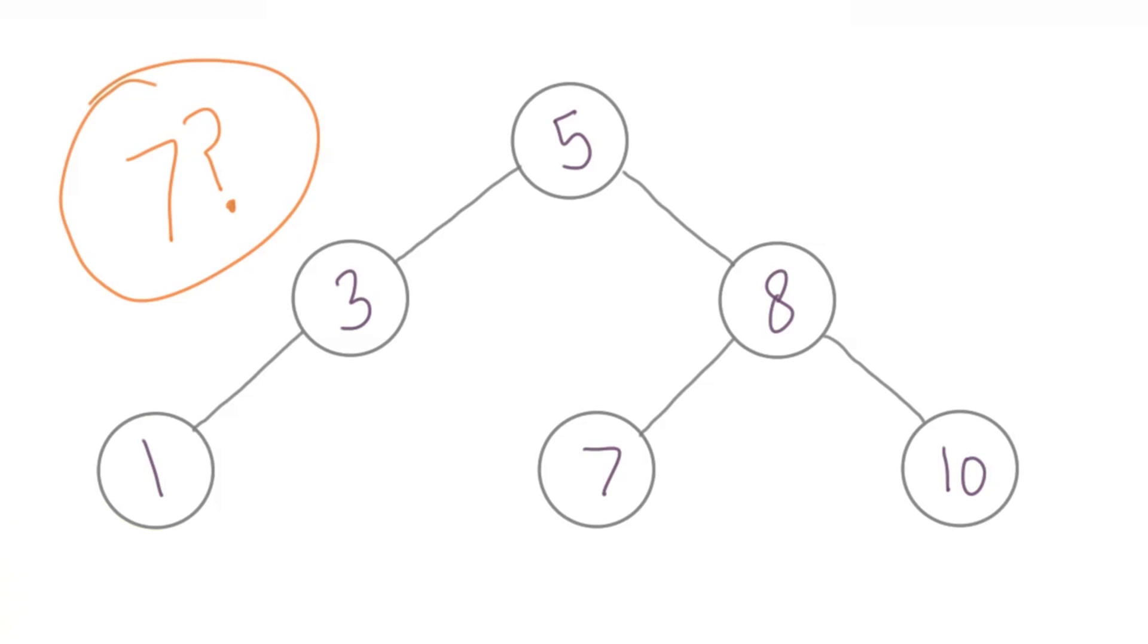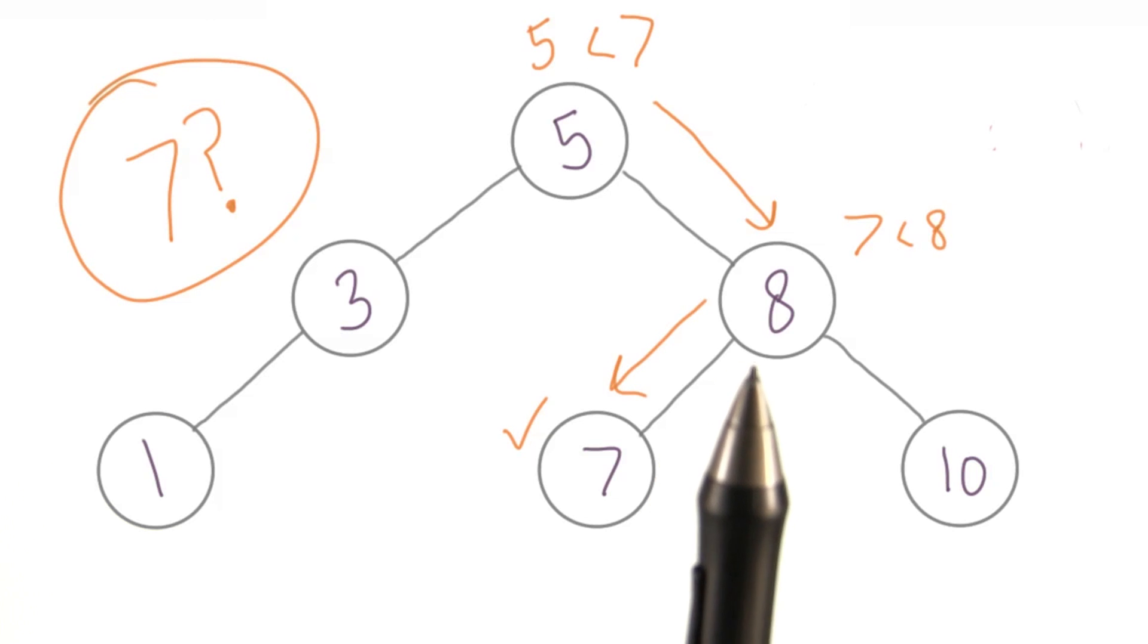Let's say we want to find 7. We would start at the root. We see 7 is greater than 5, so we go right next. Since our next element is 8, we know our next move is left. And in just a few steps, we found it.